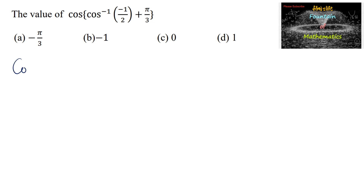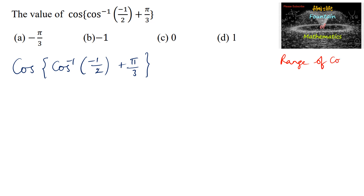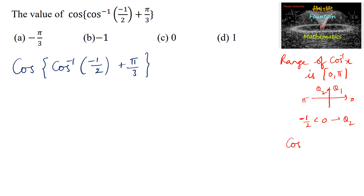Now find the value of cos(cos⁻¹(−1/2) + π/3). The range of cos⁻¹(x) is [0, π], covering the first and second quadrant. Since −1/2 is negative, cos⁻¹(−1/2) will lie in the second quadrant. We know cos(π/3) = 1/2, and cos(π − π/3) = −1/2 since cosine is negative in the second quadrant.